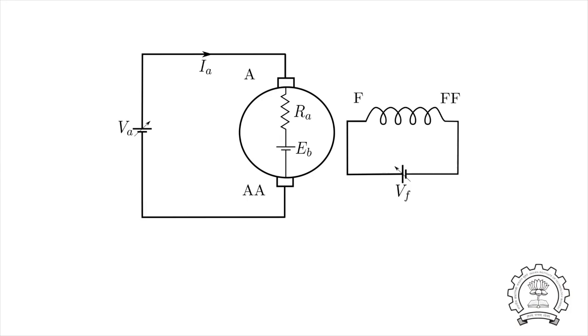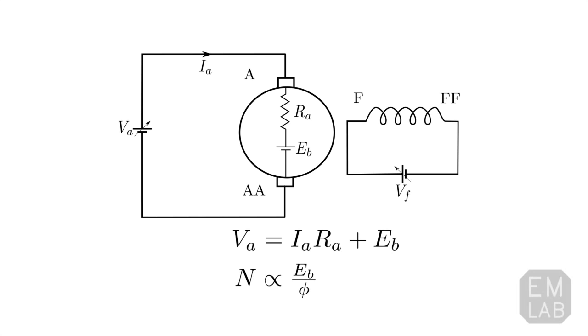This is an equivalent circuit of a separately excited DC machine. The armature is modeled as a resistance RA in series with an EMF source EB. EB represents the back EMF. Applying KVL in the armature circuit, we can write VA is equal to IA RA plus EB. We know that speed is proportional to the back EMF. If I'm keeping the value of IA constant and increase the value of VA, EB will also increase. That means the speed will increase.